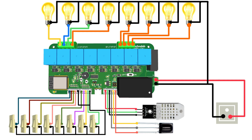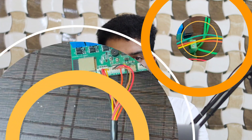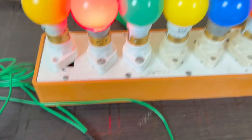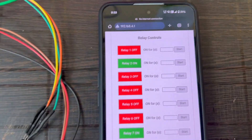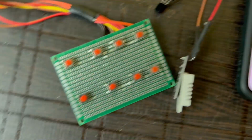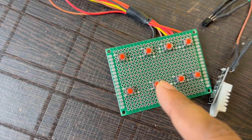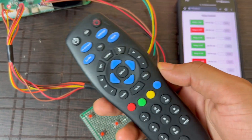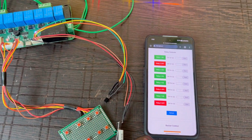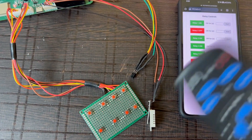Connect your appliances and manual switch buttons, IR sensor, and DHT sensor as per the circuit diagram. Note that there is an AC connection involved, so be careful while making the connections. I have completed all my connections — these are the AC bulbs I am using for demonstration, this is a latching push button used as a manual switch, and this is the IR sensor and DHT sensor.